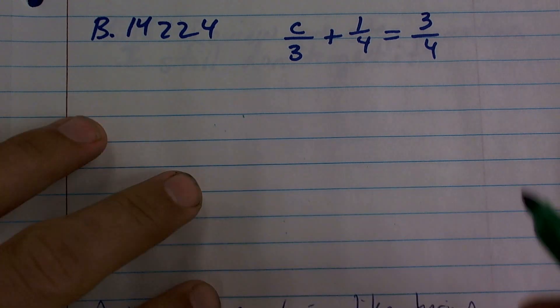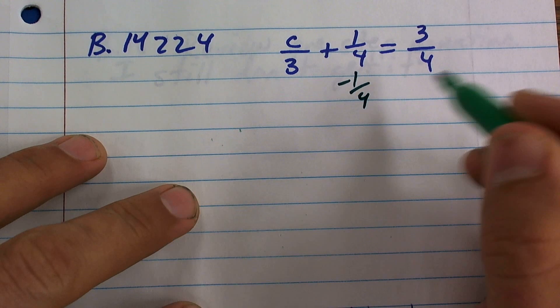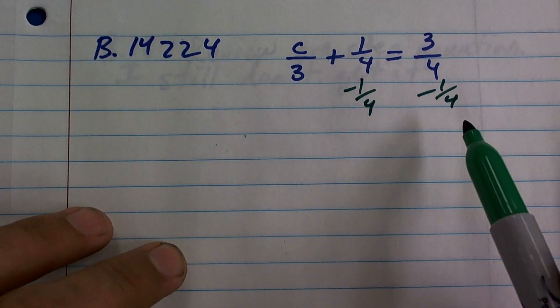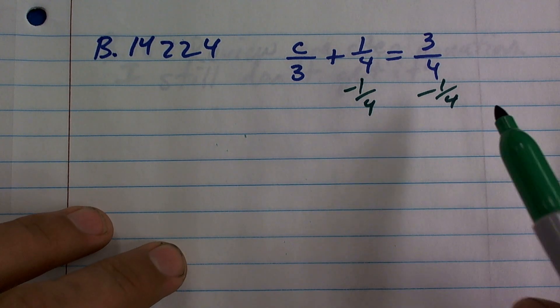We can use the inverse operations again just by subtracting 1 fourth, right? You subtract 1 fourth by 1 fourth. The reason why I said this wasn't so bad is these have the same denominator, so it's going to be really easy to subtract.